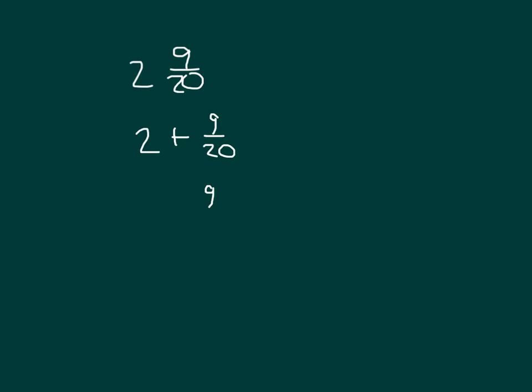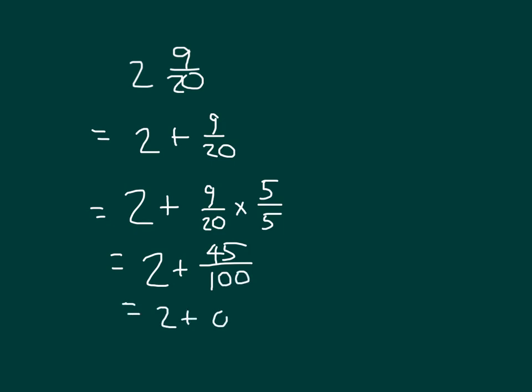That would be nine-twentieths times 5 over 5 to be able to get to hundredths, and we're still adding that to two. So we have two plus forty-five over one hundred, which is equal to two plus zero point four five, which is equal to two point four five. So we have two and forty-five hundredths, which is equal to two and nine-twentieths.